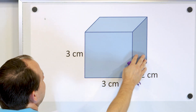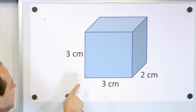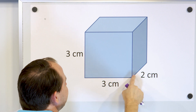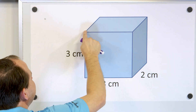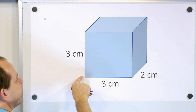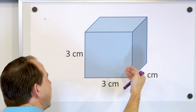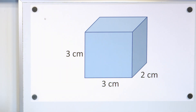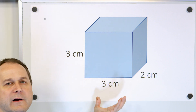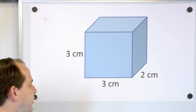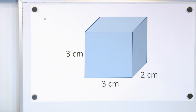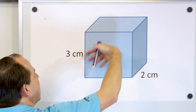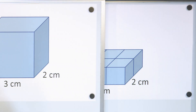For our first problem, we have a rectangular solid. This face of it is three centimeters by three centimeters, and the depth of the object into the board is two centimeters. How do I measure how much space this thing occupies? We're going to talk about the volume. The first thing I want you to do is look at the bottom layer of this thing — if I just cut everything off and look at the bottom layer, let's see what that would look like.